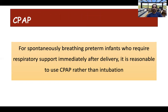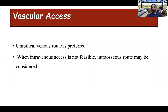All preterm babies with respiratory distress at birth should be started on CPAP rather than invasive ventilation. In a meta-analysis comparing CPAP at birth with invasive mechanical ventilation, the CPAP group had a lower incidence of the combined outcome of BPD or death, with a number needed to benefit of 25. For vascular access, the umbilical vein is the preferred route; an umbilical venous catheter should be placed to the low position where there is free flow of blood. If intravenous access is not feasible, the intraosseous route can be considered depending on available expertise and equipment.